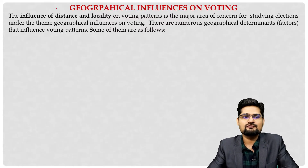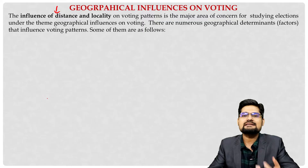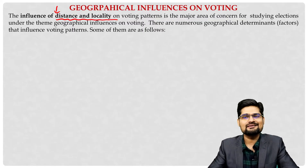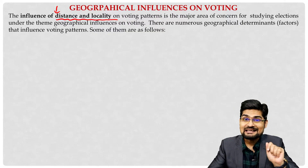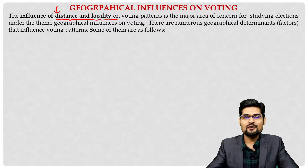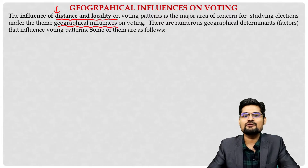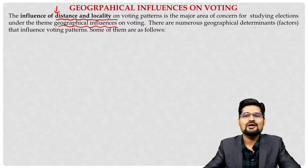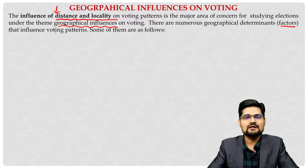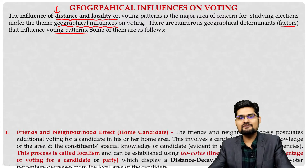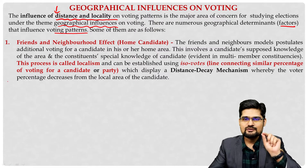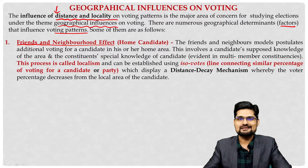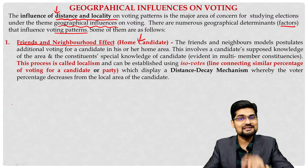Geographical influences on voting can be discussed in various aspects. The influence of distance and locality on voting pattern is the major area of concern for studying elections across the world. There are also numerous other determinants and factors that influence voting patterns. The first kind of analysis we can do is friends and neighborhood effect analysis, also called home candidate analysis.